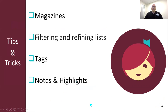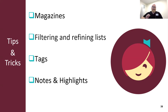Let's look at the four tips and tricks we'll cover today. First, I'm going to talk about magazines and some great new features in the Libby app. Then we'll look at ways to filter and refine our lists to find titles we like faster while browsing or searching. Third, we'll talk all about tags — one of my favorites — what they are, why I love them, and how you can use them. And we'll wrap up with making and exporting notes and highlights.